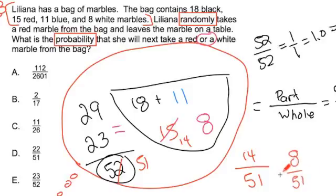And since it's simple probability, since it's either going to be the red or the white, I add those, the likelihood of both of those events happening. And I get an answer of 22 over 51.